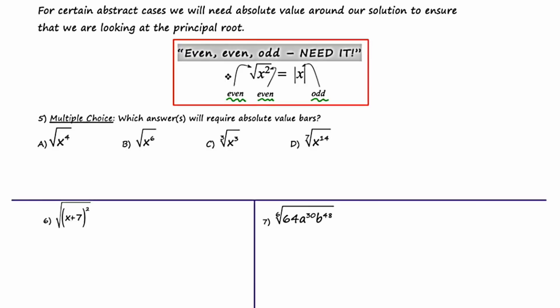Let's take a look at number five, a multiple choice question: which answer or answers will require absolute value bars? Let's simplify each of the four answers. In 5a, the square root of x to the fourth — what monomial times itself gives x to the fourth? The answer is x squared. For B, the square root of x to the sixth — that answer is x to the third. For C, the cube root of x cubed — what monomial times itself three times gives x cubed? That's just x. And for D, the seventh root of x to the fourteenth — what monomial times itself seven times gives x to the fourteenth? That's x squared.